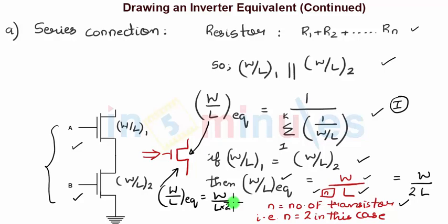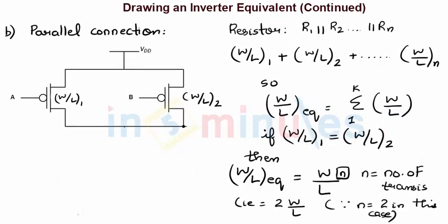Now let's see what happens when transistors are connected in parallel. Here we have two PMOS transistors connected in parallel. We follow the same approach as for the series case. When resistances are connected in parallel, we have R1 parallel to R2 parallel to Rn. The W/L when transistors are connected in parallel would then be straightforwardly added up, as happens in the series phenomena for resistors.